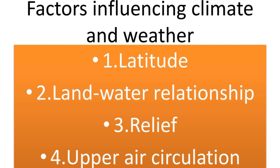The factors that affect climate are called climatic controls. These include: first, latitude; second, land-water relationship; third, relief; and fourth, upper air circulation.